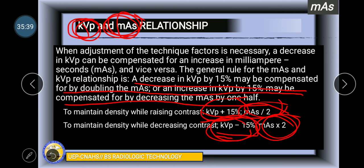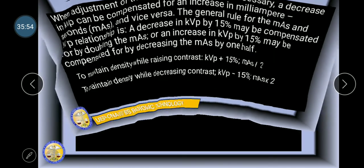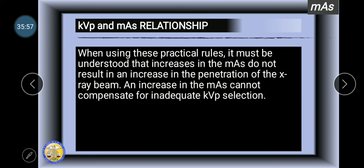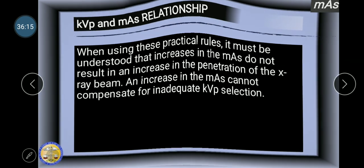You increase KVP by 15%, but mAs divide by 2. You decrease KVP by 15%, mAs multiplied by 2. He must increase, I must decrease. He must increase, I must decrease. Not all the time we should be on top. We need to humble ourselves. That's the moral lesson of KVP and mAs relationship.